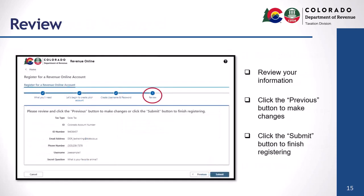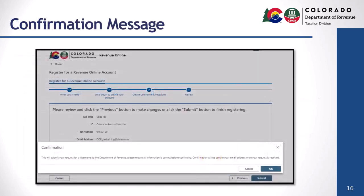Review the information you entered. You can click the previous button to make changes or click the submit button to finish registering. The confirmation message tells you that once you click OK, your request for a username will be submitted to the Department of Revenue. Ensure that all the information you entered is correct before continuing. A confirmation will be sent to your email address once your request has been received. Simply click OK.